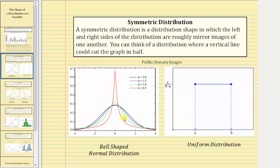A bell-shaped or normal distribution as pictured here, as well as the uniform distribution, are both symmetric distributions because the left and right sides of the distributions are mirror images of one another.